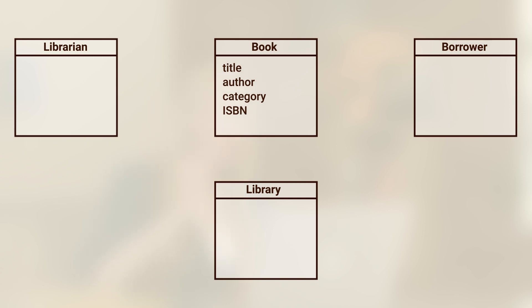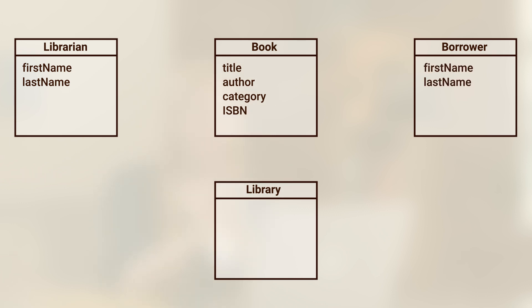What types of attributes might a librarian have? For the sake of our system, they should have a first name and a last name so that we can identify the librarian. You'll notice I wrote these in camelCase — the first letter of the first word is lowercase and the first letter of the second word is uppercase, which you'll see often in programming. I'll add the same attributes to my borrower, because they also have a first name and a last name. I'll also add an attribute called 'balance' to track the borrower's late fees. For the library, it's simple — it just has a name and an address.